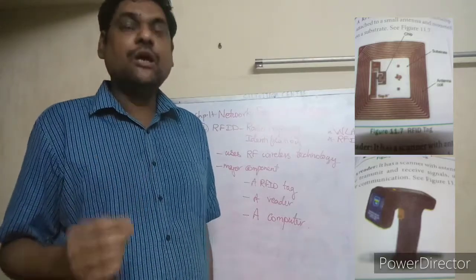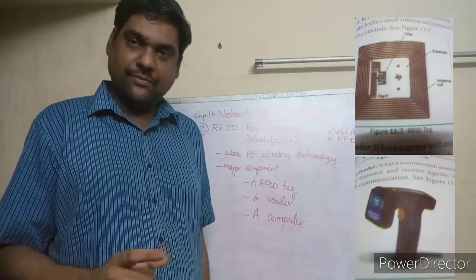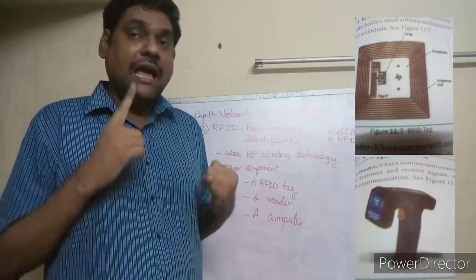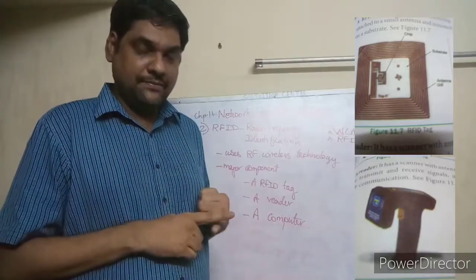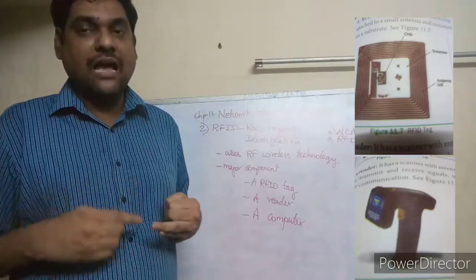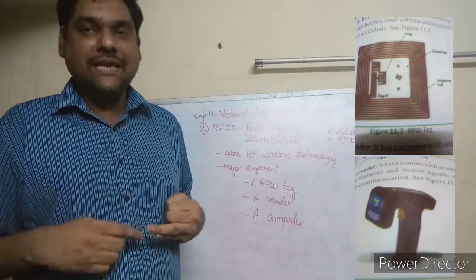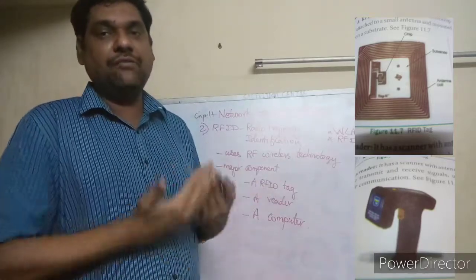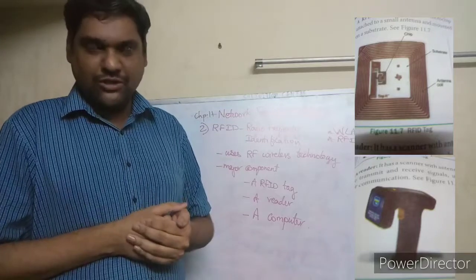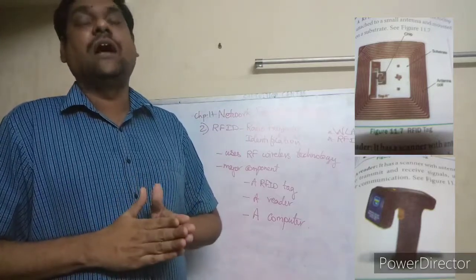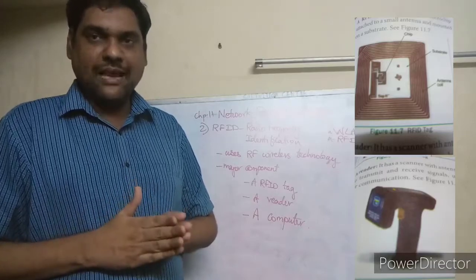This is how the passive RFID works—send electrical signals to identify where the object is. Children, this is about RFID technology. I hope you would have understood well. Thank you, children.